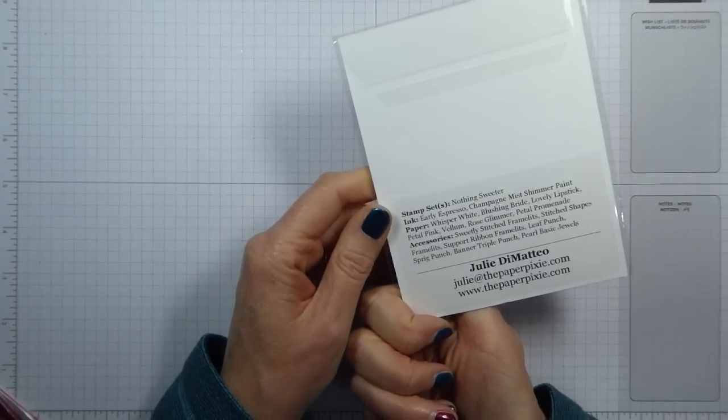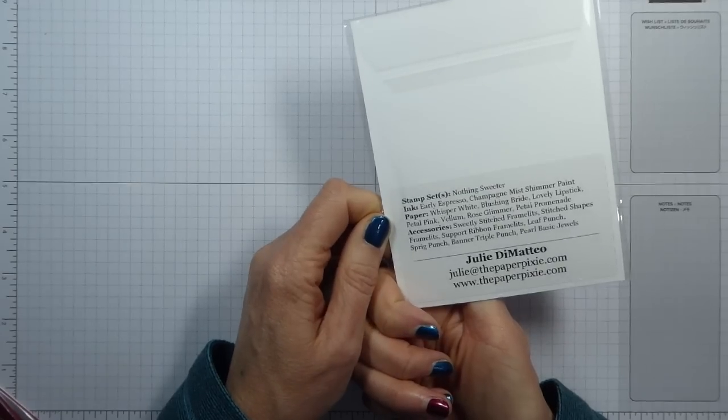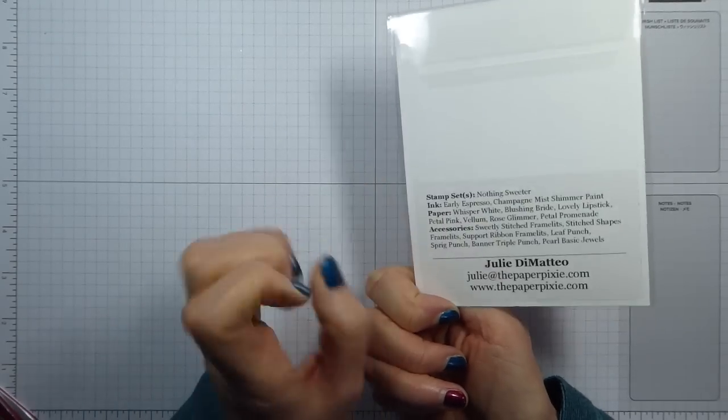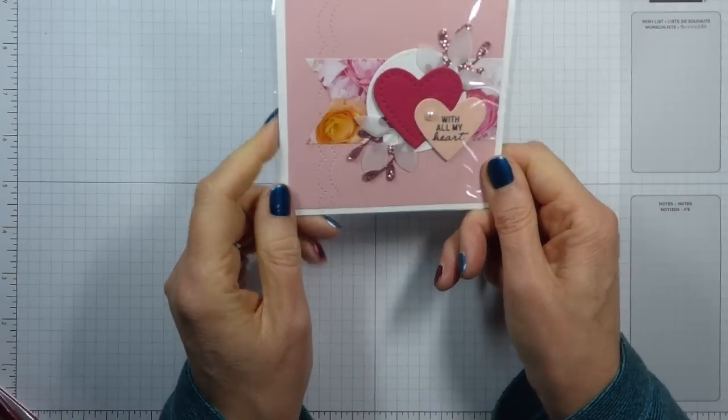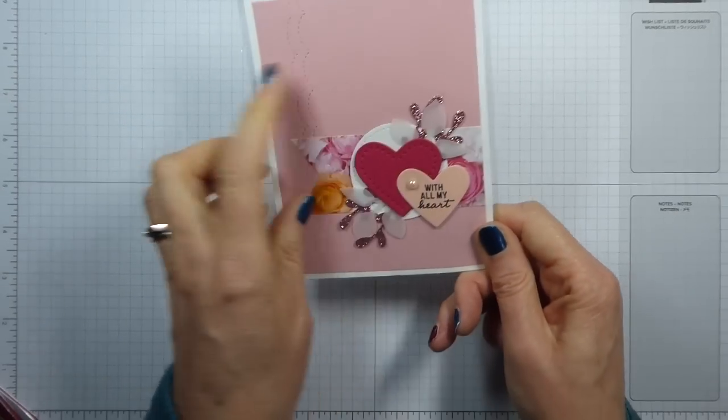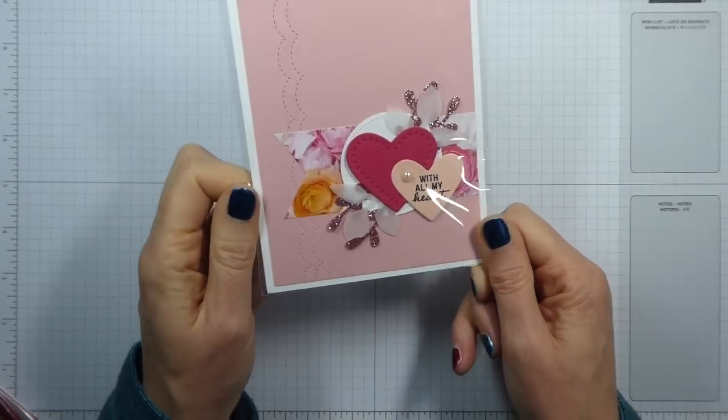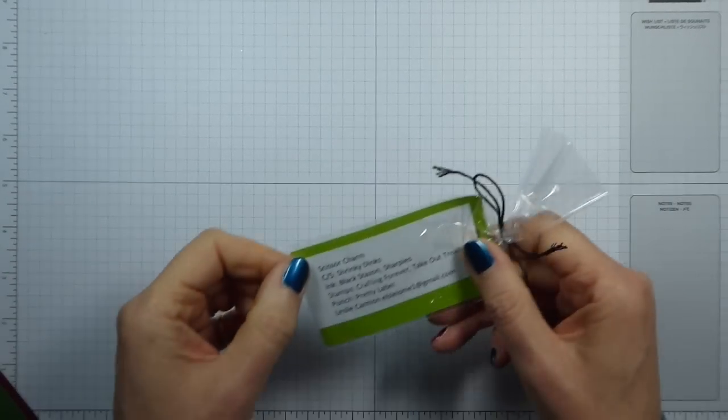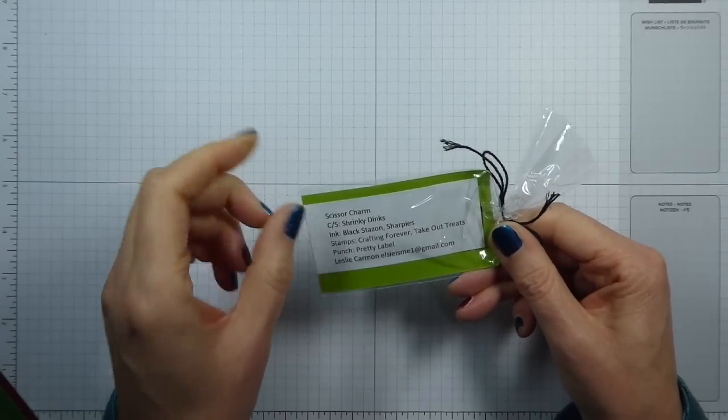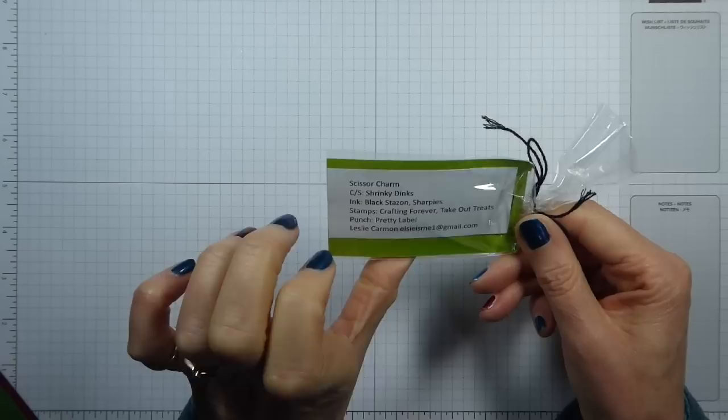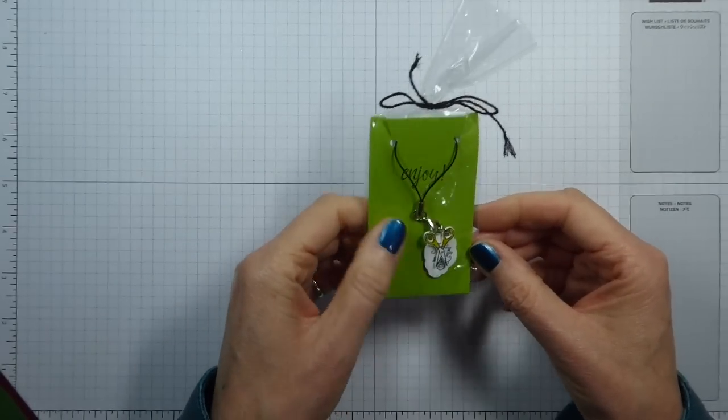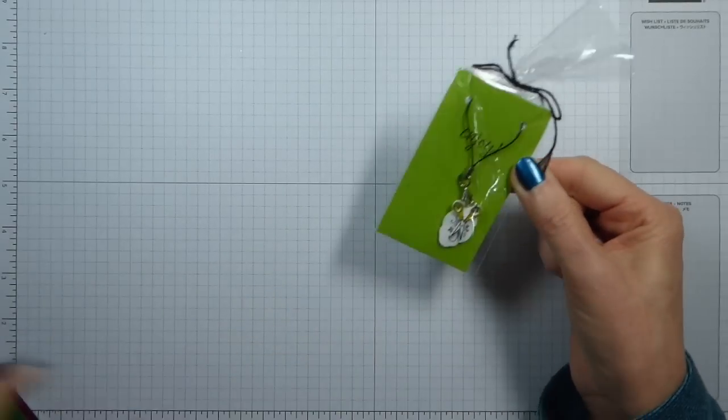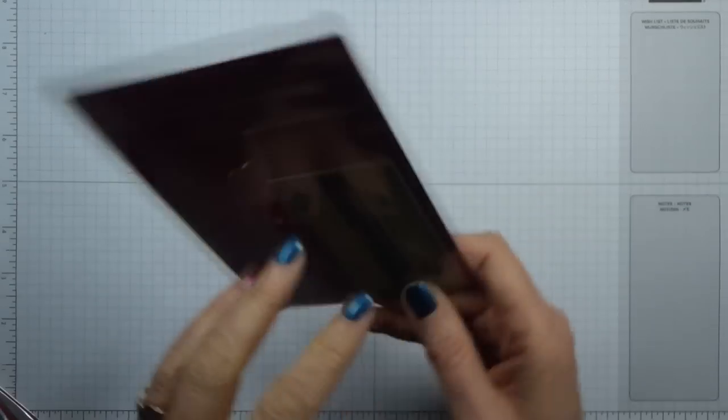This is from the Paper Pixie, Julie DiMatteo. I watch quite a lot of her videos. Really pretty and it's got shimmer paint on it. I don't have this stamp set either. A scissor charm from Leslie Carman. Don't know where she's from. I will add that to my scissors because as you know I like a scissor charm.